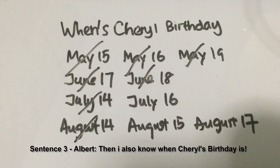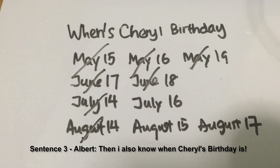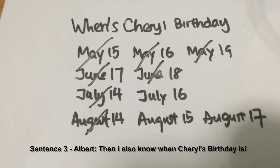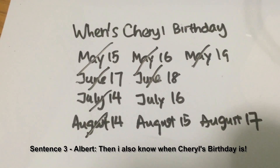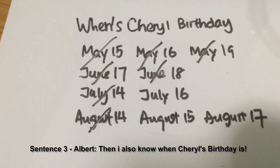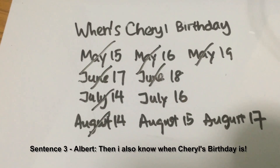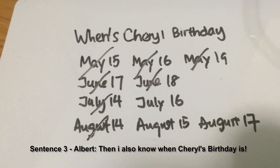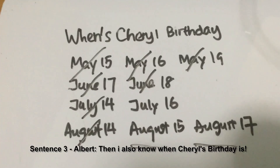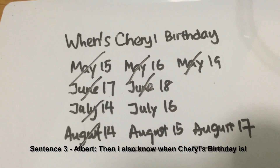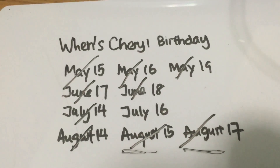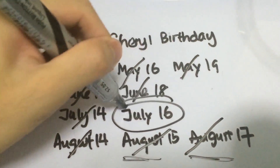And Albert says that now he also knows when Cheryl's birthday is. Don't forget that Albert is given the month itself. So you have to think of the opposite scenario whereby Albert still does not know after the two statements. The only case where Albert does not know is if he was given August as the month, because there are two possibilities remaining in August. Hence we can cancel those two August dates and we are left with the answer — July 16. Pretty simple, right?